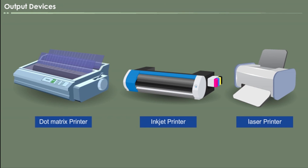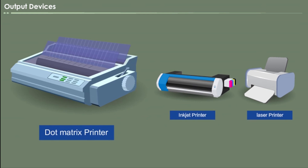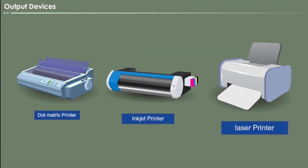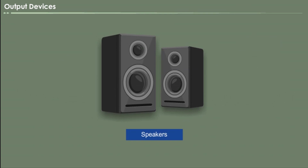Printers. The printer takes the information on your screen and transfers it to paper or a hardcopy. Three types of printer are used commonly: dot matrix, inkjet and laser. Speakers. They receive audio input from the computer's sound card and produce audio output in the form of sound waves.